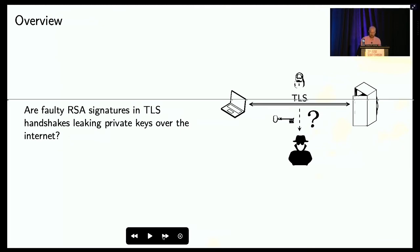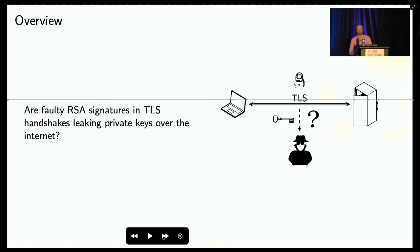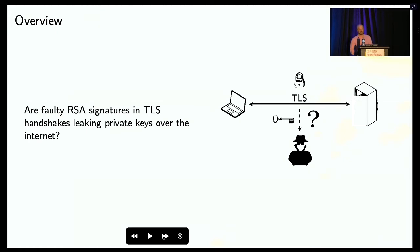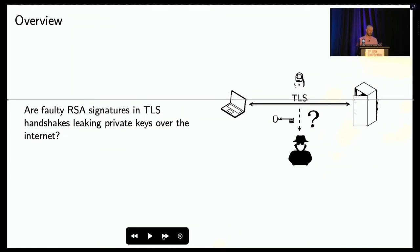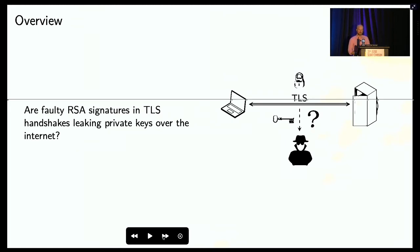To understand how simple faults in RSA signatures can leak private keys, we need to briefly review RSA. We have Alice and Bob: RSA is a digital signature scheme that allows Bob to authenticate — to prove to Alice that he's the owner of a particular private key — by signing a message and sending the message and signature to Alice.